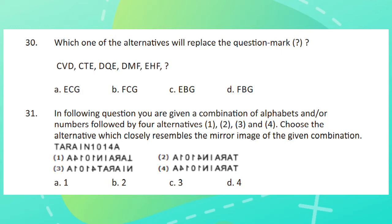Question 31. In following question, you are given a combination of alphabets and or numbers followed by four alternatives, 1, 2, 3 and 4. Choose the alternative which closely resembles the mirror image of the given combination.